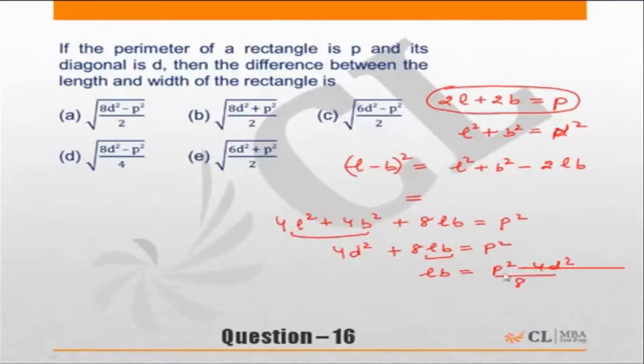I can put the values of this LB here and say L square plus B square is D square minus 2 into P square minus 4D square by 8.